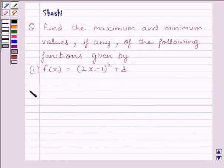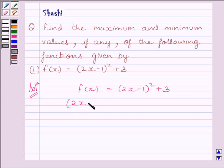Now, let us start the solution. We are given f(x) = (2x - 1)² + 3. We know a perfect square cannot be negative. So, we can write (2x - 1)² ≥ 0.